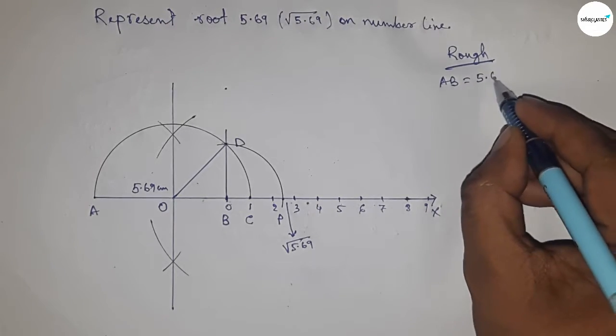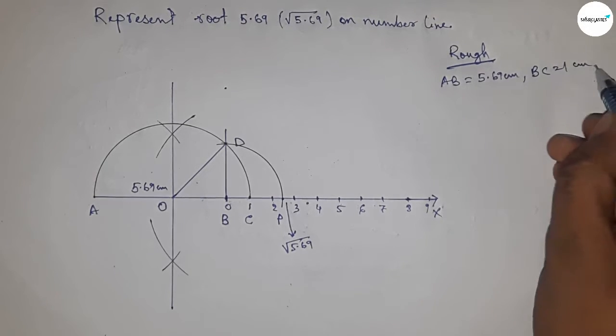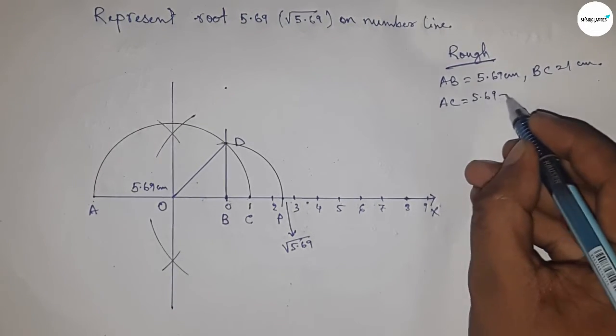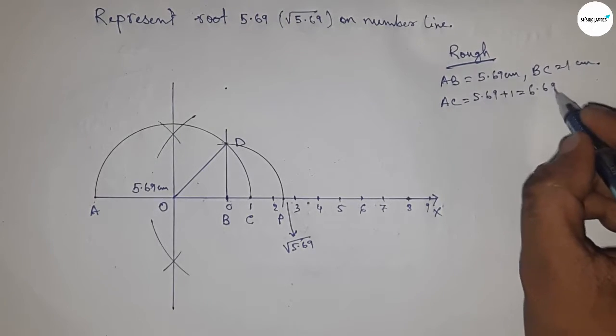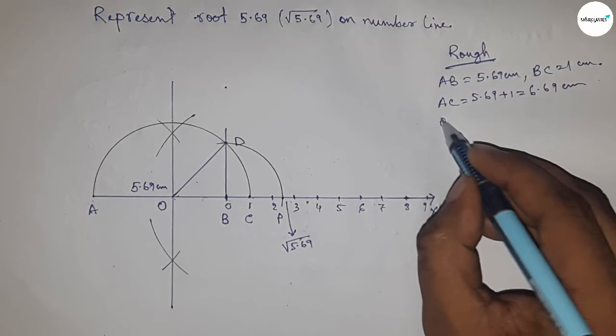So given AB equal to 5.69 centimeter and BC equal to 1 centimeter. So we can write AC equal to 5.69 plus 1, so 6.69 centimeter.